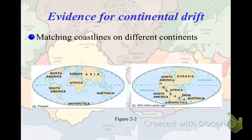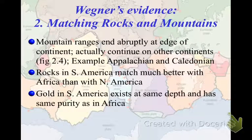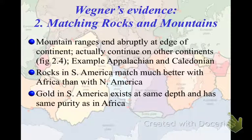Wegener also used matching rocks and mountains as evidence. The Appalachian Mountains along the East Coast and the Caledonian Mountains in Europe are very similar in height, size, age, and rock composition. He also noticed that rocks in South America match better with Africa than with North America. One of the key points he emphasized is that gold, which has a local purity level when mined, occurs at the exact same level of purity and at the exact same depths in South America as it does in Africa — suggesting they were once one continent.